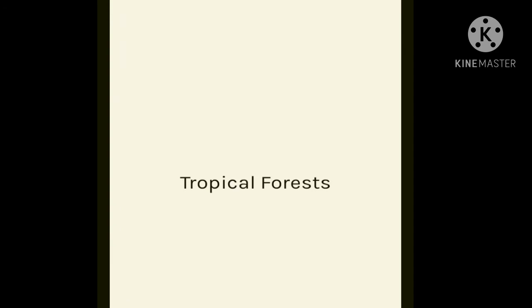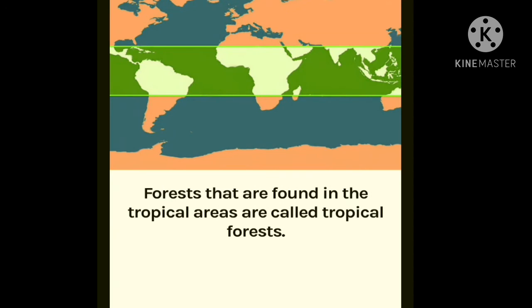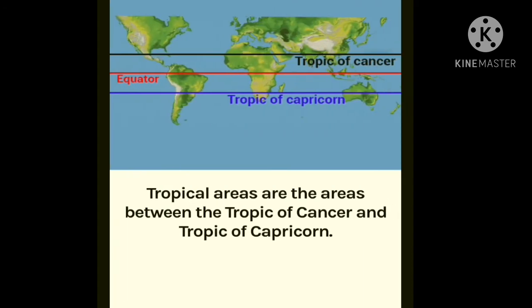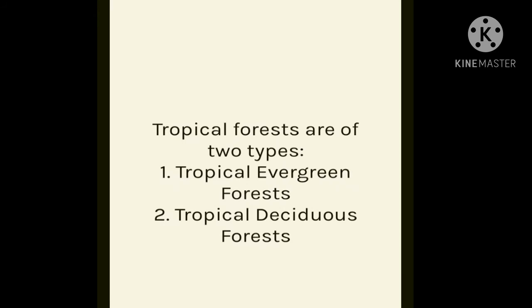In the next topic we are going to learn about tropical forests. Forests found in the tropical areas are called tropical forests, shown here with the green strip. Tropical areas are between the Tropic of Cancer and Tropic of Capricorn. Tropical forests are of two types: tropical evergreen forests and tropical deciduous forests.